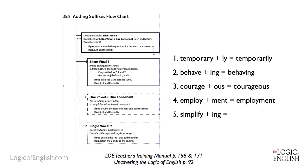The final word is simplify, and we're going to add the ending -ing. Does simplify end in a silent final E? No. Does it end in one vowel followed by one consonant? No. Does it end in a Y? Yes. Does it end in a single vowel Y? Yes. Does the suffix begin with any letter except I? No, it begins with I. So if no, retain the Y and add the ending — we keep the Y in simplify to make simplifying.